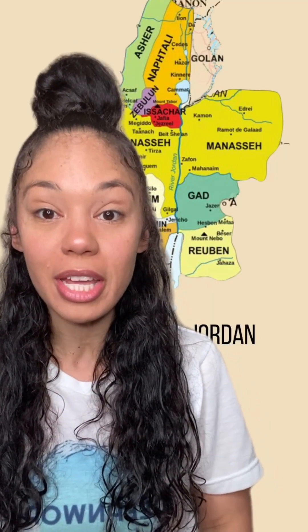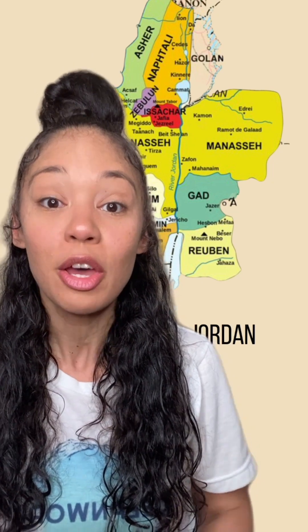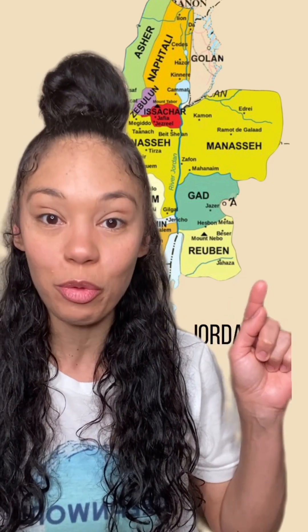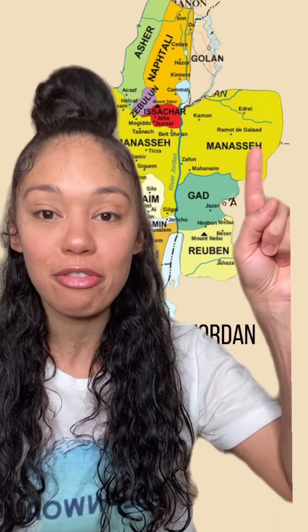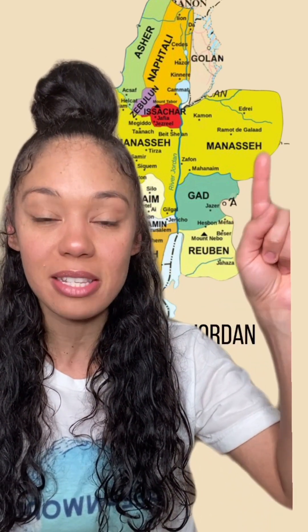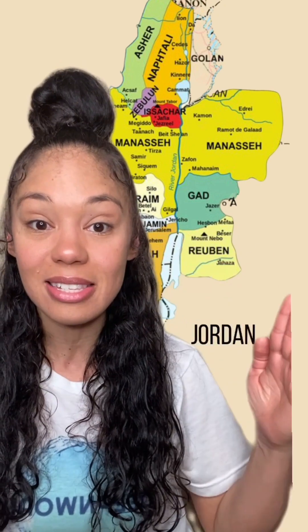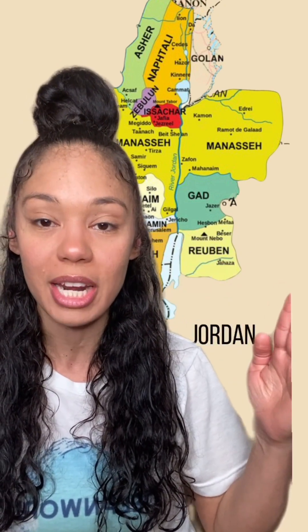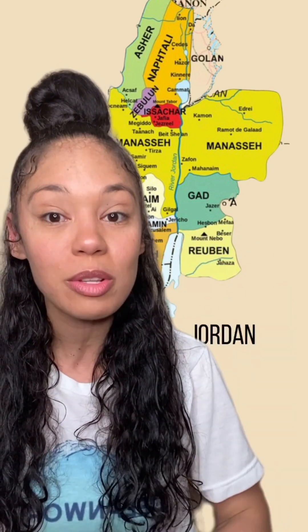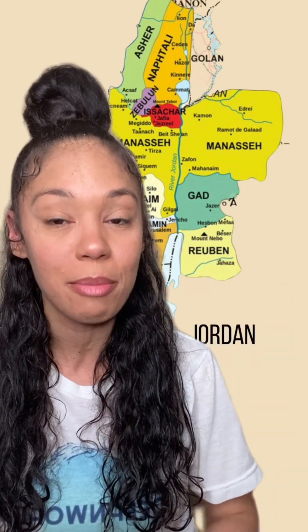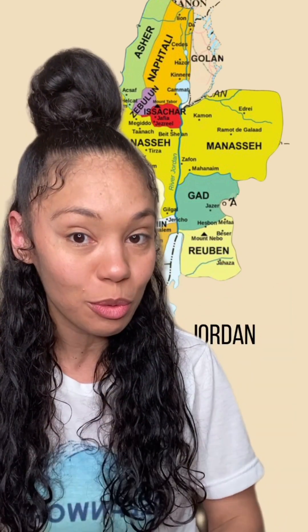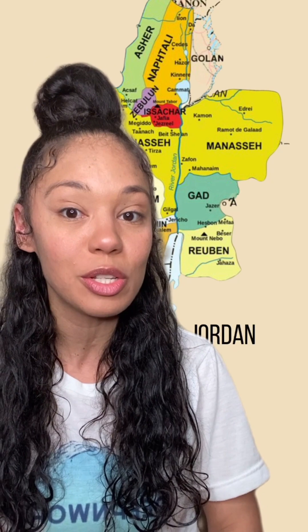The rest of chapter 13 is literally about the allotment — the inheritance — for the tribe of Reuben, Gad, and the half tribe of Manasseh on the east side of the Jordan, as Moses had promised them back in Deuteronomy 32.